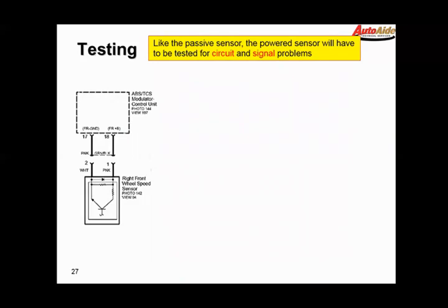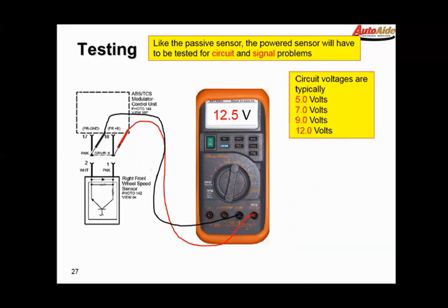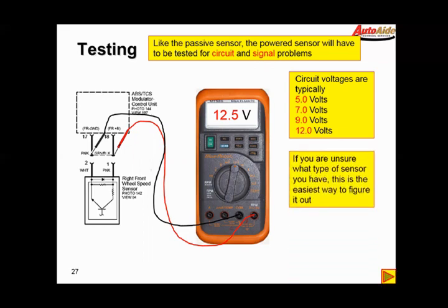That brings us to the powered sensor. These guys are a bit of a different animal. Typically the ABS control module is going to power these guys up. It will, depending on manufacturer, provide different power-side voltages: 5, 7, 9, or 12 volts are pretty popular with these guys. If you're unsure what you're dealing with, basically unplug the sensor, measure across the two wires coming down from the ABS module, put a voltmeter with the key on, and you should be able to tell what your sensor voltage will be operating at.